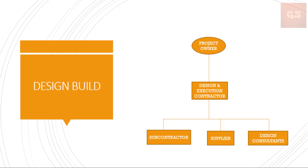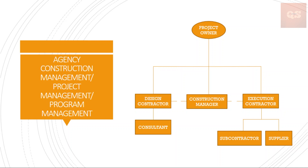The next arrangement is called the Agency Construction Management arrangement, also called project management or program management contracting. Here, the owner still maintains a direct contractual relationship with both the design professional and the execution contractor, but will also have a contract with an independent construction manager who coordinates between the two entities — the design contractor and the execution contractor — and oversees the activities of both. The construction manager is granted some authority as a limited agent of the owner, meaning they can take certain contractual actions in the owner's name and the owner will be bound by such actions, while some critical actions remain exclusively reserved to the owner.